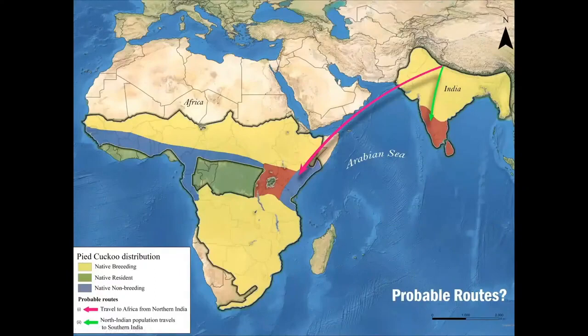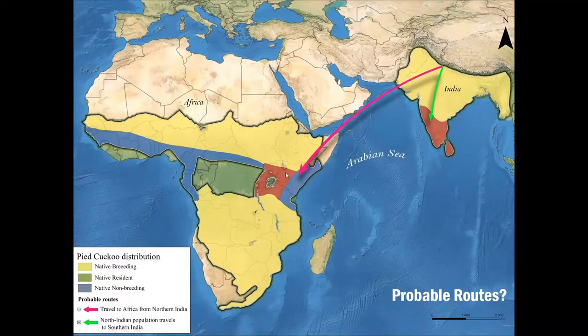This still leaves the question: was the movement path of the species through the Arabian Peninsula overland, or does it take the sea route? To answer this question, we used satellite telemetry to track its migration route.